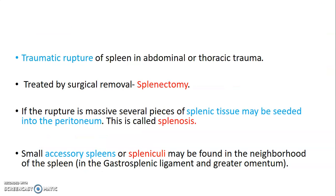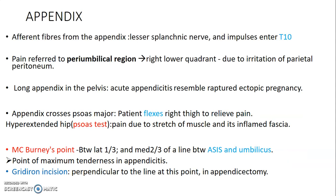The spleen can also rupture due to trauma, and in such cases it is removed by a process called splenectomy. Massive rupture of the spleen can cause splenic tissue to be seeded into the peritoneum — this is called splenosis. Small accessory spleens, called spleniculi, arise from failure to fuse embryologically and can be found within the gastrosplenic ligament or at the greater omentum.